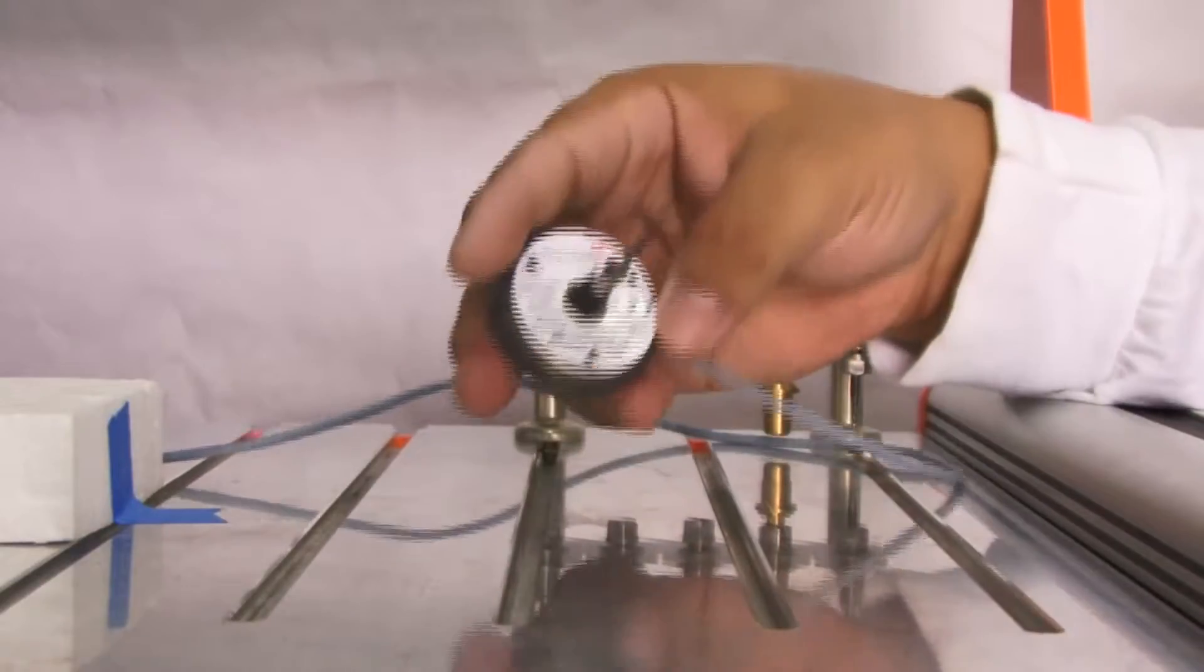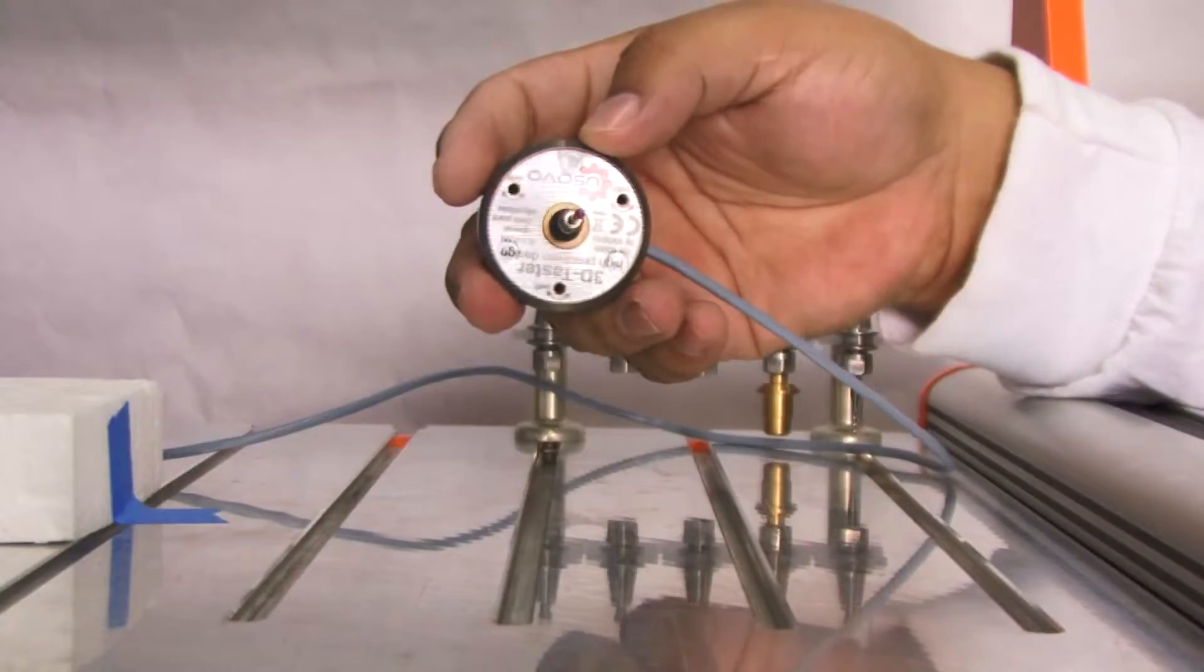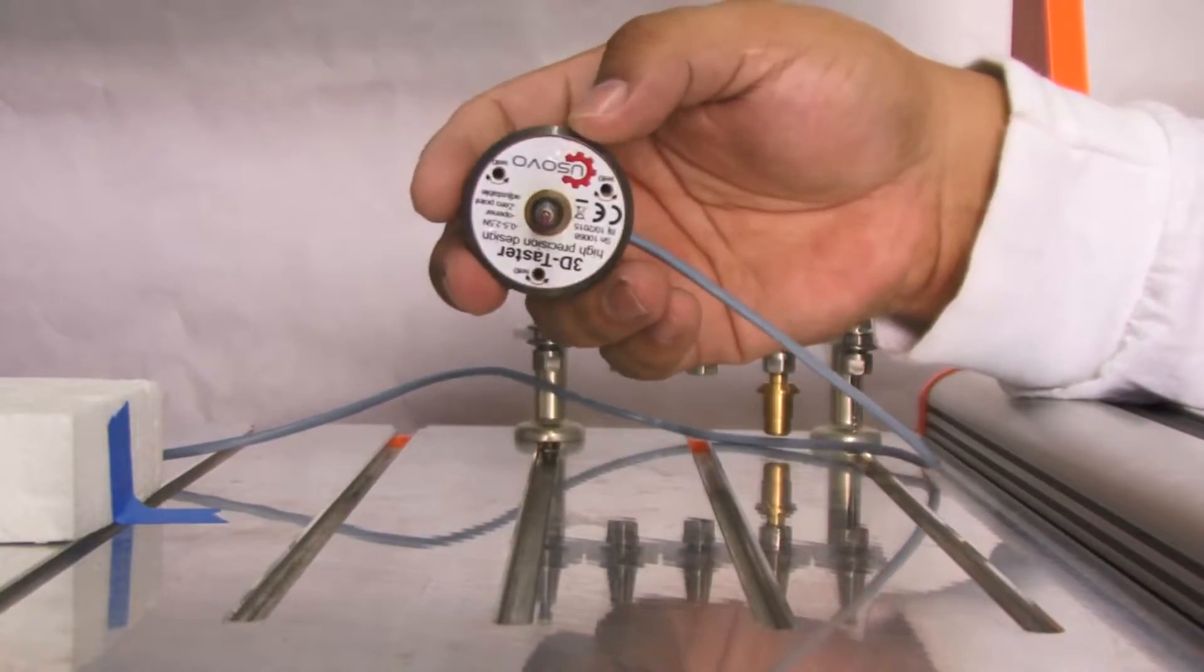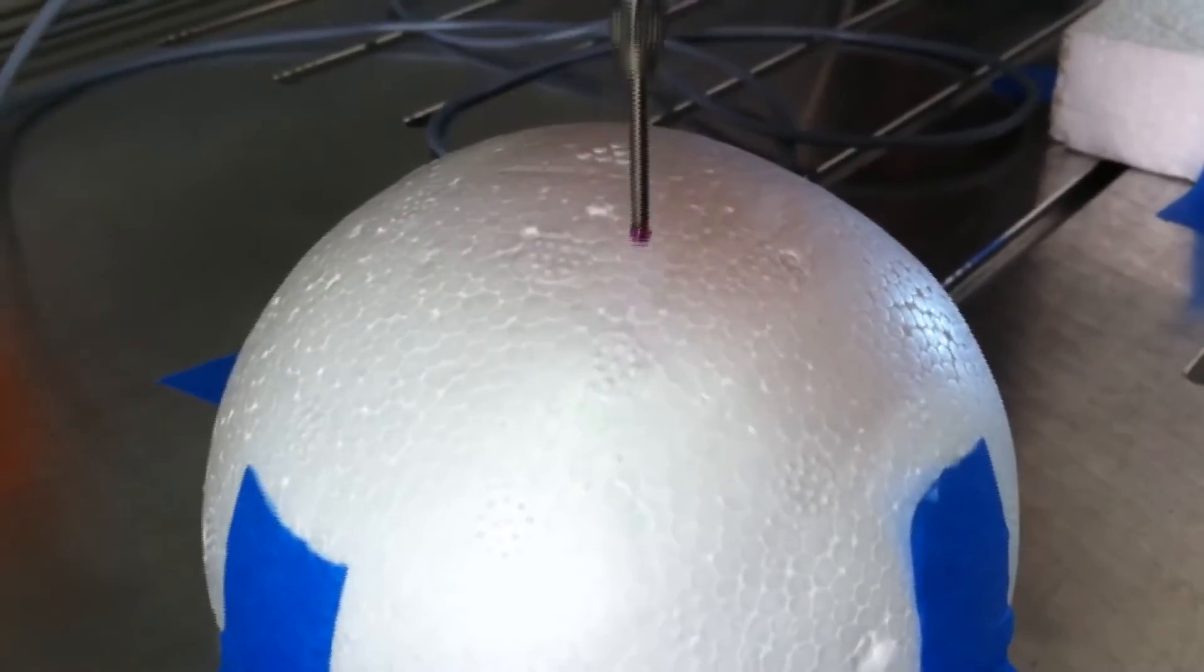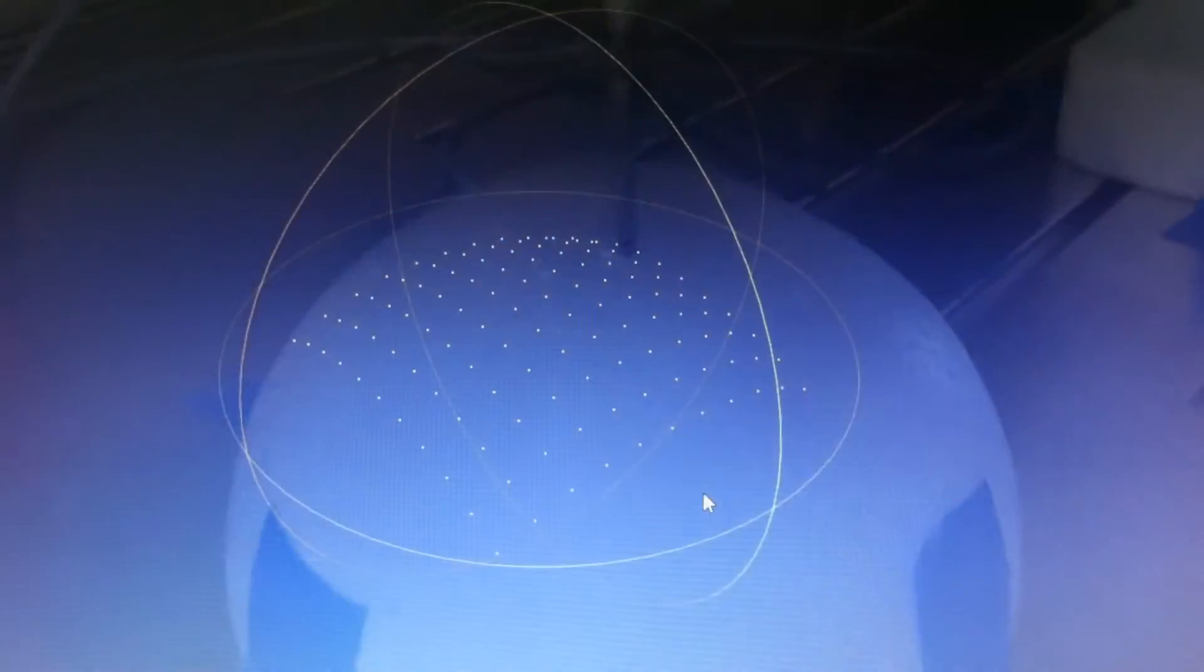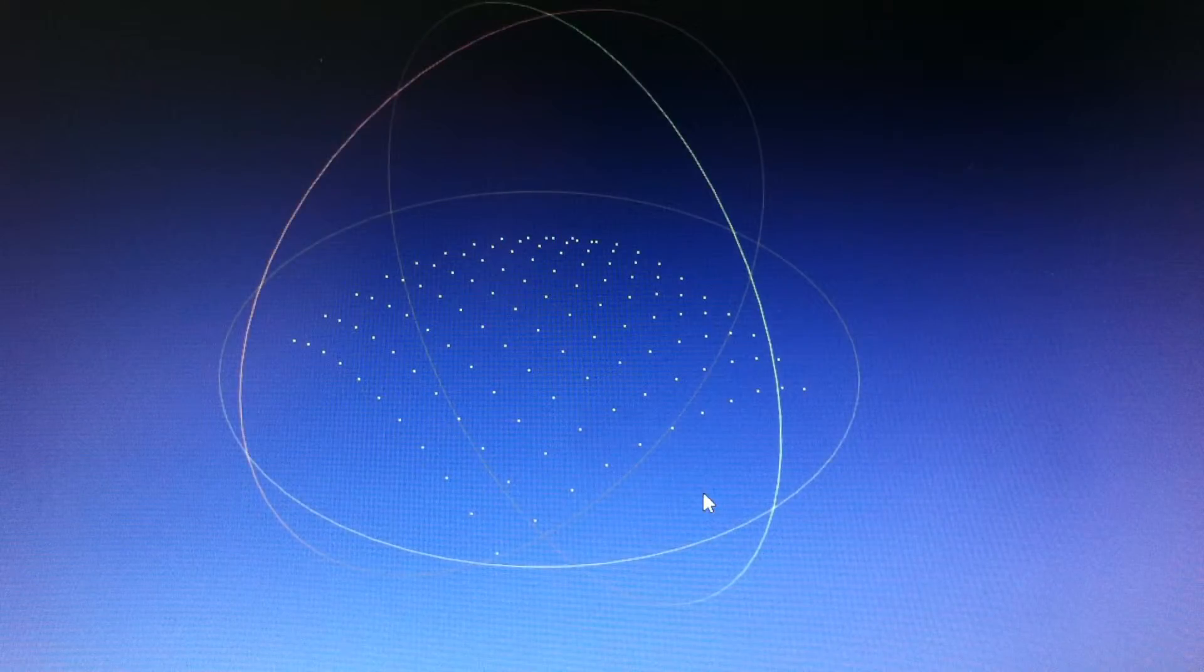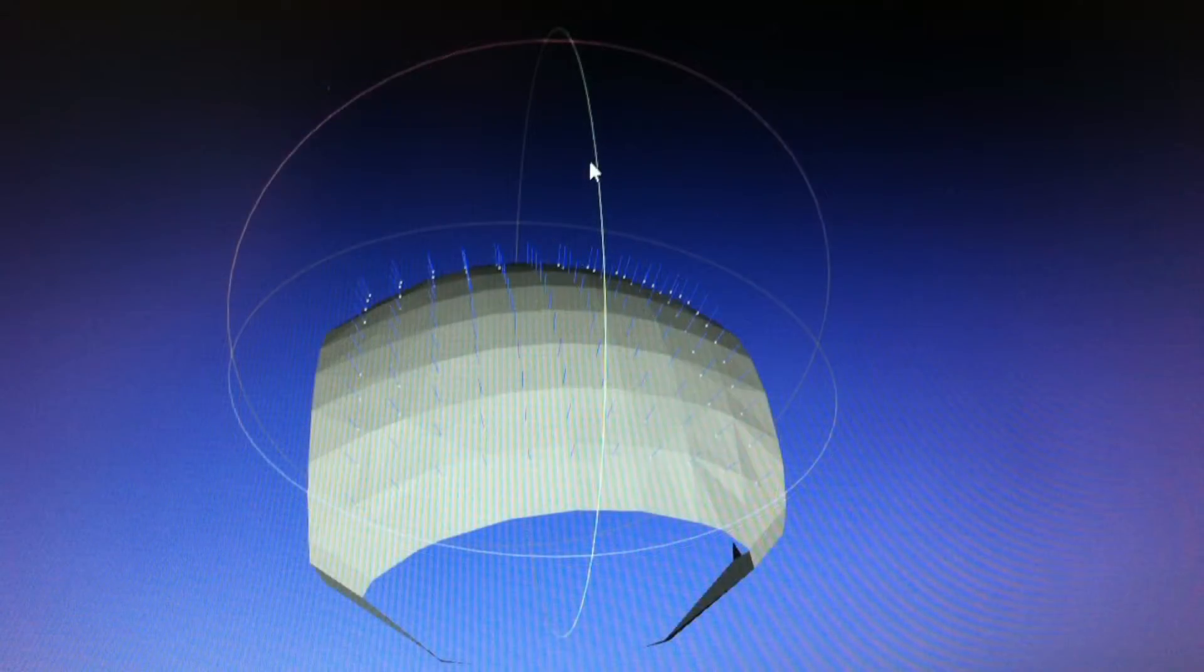Another cool thing you can do with this is actually scan an object. If you have the point cloud when you're mapping the surface, you can have a 3D representation of an object and translate that to software to rebuild the object. You can make another object based on the scan you made with this.